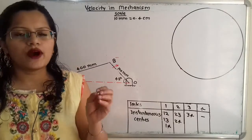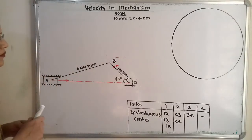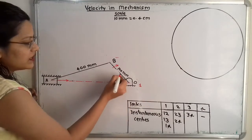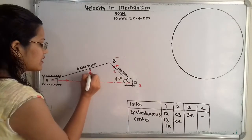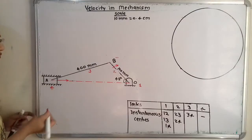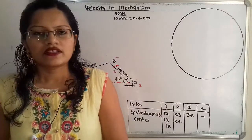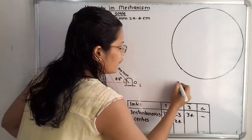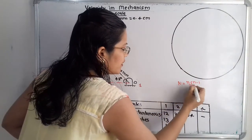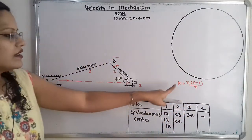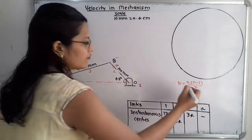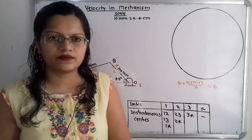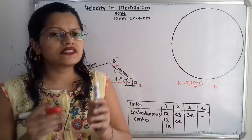Now we identify how many links are there. OB is rotating about fixed center O, so that is the fixed link 1. OB is link 2, the connecting rod AB is link 3, and the slider is link 4. So there are 4 links in total. To find the number of instantaneous centers we use the formula N = n(n−1)/2, giving 4×3/2 = 6 instantaneous centers.